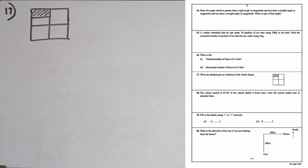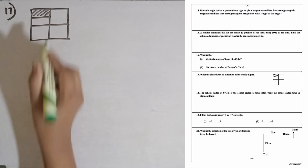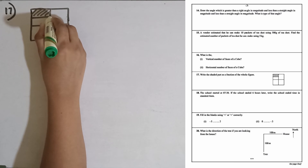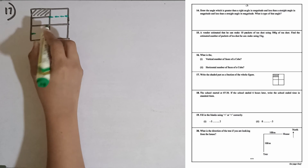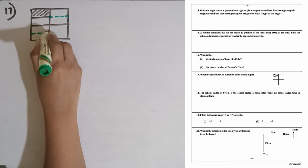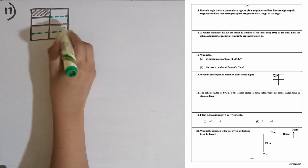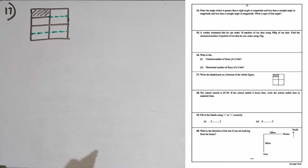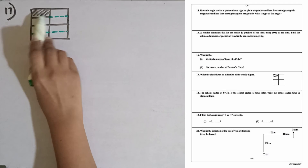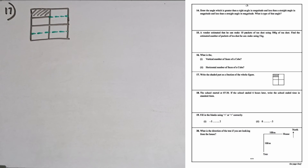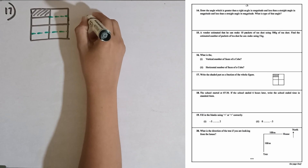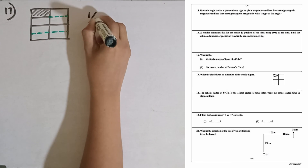Question number seventeen: write the shaded part as a fraction of the whole figure. I can separate this figure into similar parts as the shaded part. How many total parts are there? 1, 2, 3, 4, 5, 6, 7, 8. So the fraction can be written as 1 over 8.